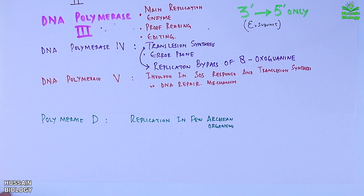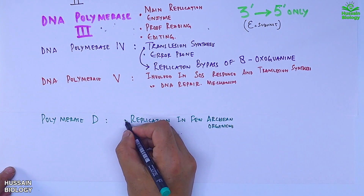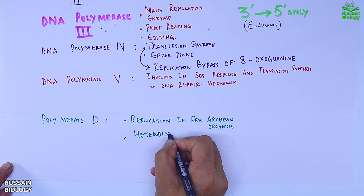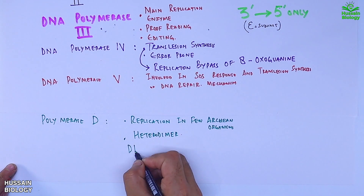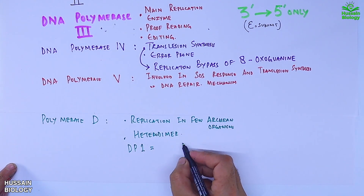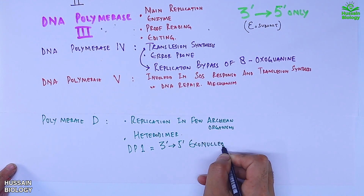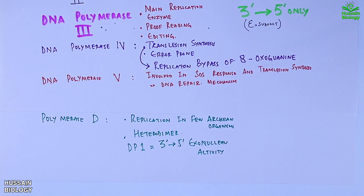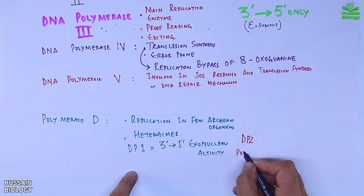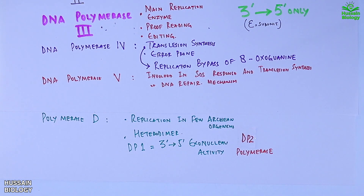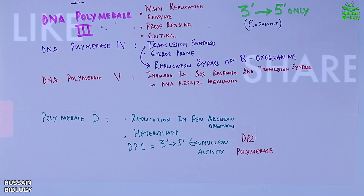Polymerase D is different from other polymerase enzymes due to its heterodimeric structure. One monomer of polymerase D, called DP1, shows 3' to 5' exonuclease activity. And the other monomer, DP2, shows polymerase activity. So this is the classification of DNA polymerases and the prokaryotic DNA polymerases in detail.